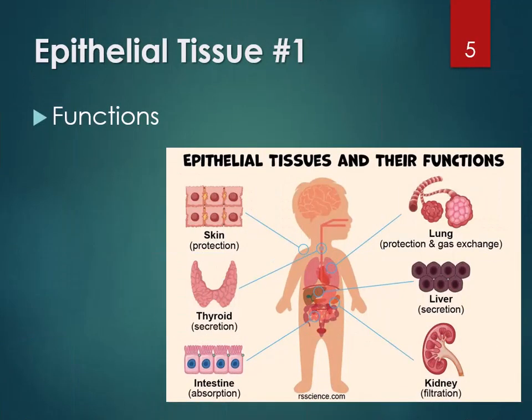Let's start with epithelial tissue. Epithelial tissue protects — it lines hollow organs and tubes and protects them from whatever's in the space. For example, the lining of your stomach is epithelial tissue, and it protects the tissues underneath from the acidic environment of the stomach. That fluid is very acidic and would otherwise burn through the stomach walls without that epithelial lining.